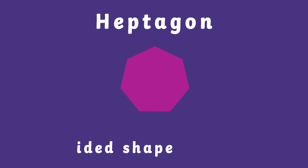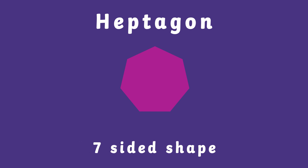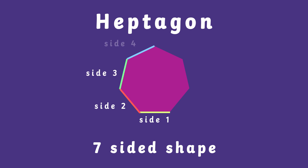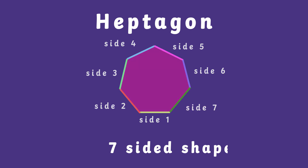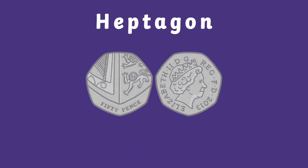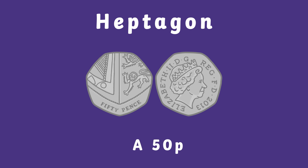Next up is the heptagon shape. This shape has seven sides. A real life example of this shape is a 50p. See if your 50p has seven sides.